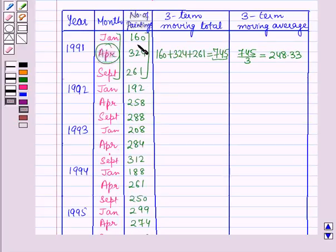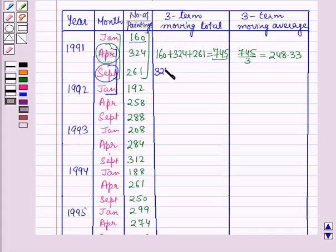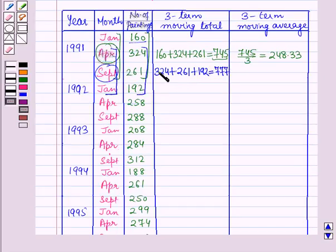In the next step, we leave the first value and add the values of the next 3 terms. We add 324 plus 261 plus 192, which equals 777, and put it against the middle term, which is September. For the 3-term moving average, we divide 777 by 3, which equals 259.